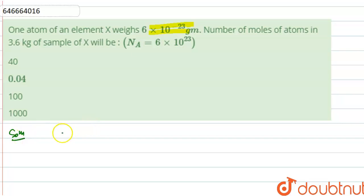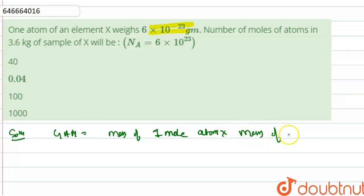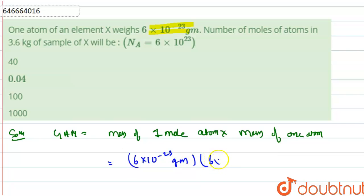Gram atomic mass is equal to mass of one mole of atoms multiplied by the mass of one atom. Mass of one mole of atoms and mass of one atom are both given. Therefore, gram atomic mass equals 6×10⁻²³ grams × 6×10²³, which equals 36 grams.